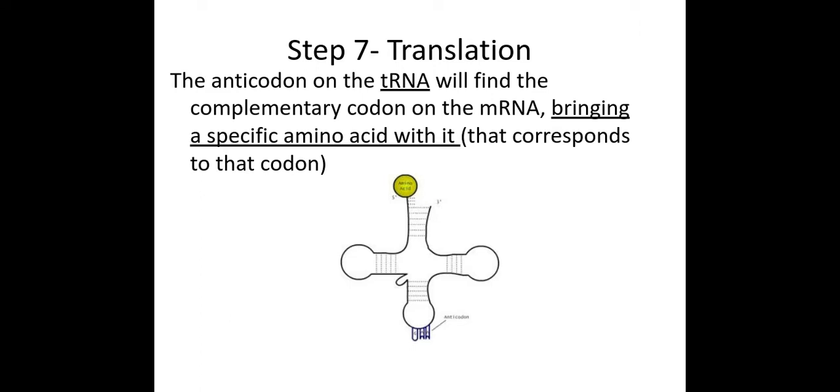Once it's attached, the anticodon, which is on the tRNA, so here's the anticodon here on the bottom, it consists of three bases. And this anticodon here is going to be complementary to the codon, which again is three bases on the mRNA. And this anticodon here is going to be specific to a certain amino acid, which it carries with it.